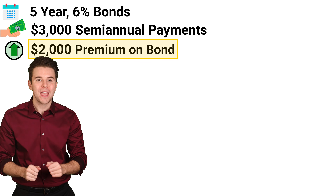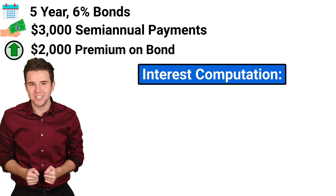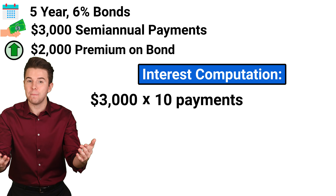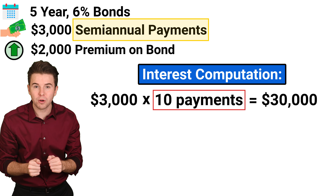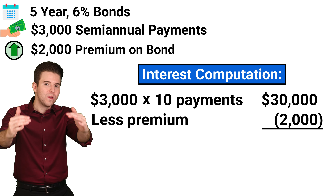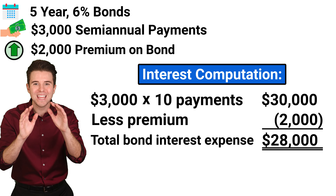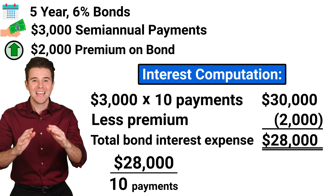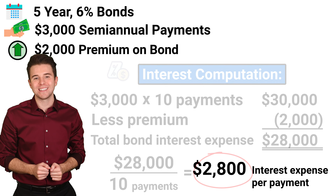To amortize the $2,000 premium and record interest expense for each of the semi-annual interest payments, we do a short calculation. First, we take the semi-annual interest payment of $3,000 and multiply it by 10 payments to get $30,000. We use 10 payments because we must make 2 payments per year for the next 5 years. Next, we subtract the $2,000 premium, as this amount reduces our total bond interest expense. This gives us total bond interest expense of $28,000, and we divide that by 10 payments, giving us bond interest expense of $2,800 for each semi-annual payment.